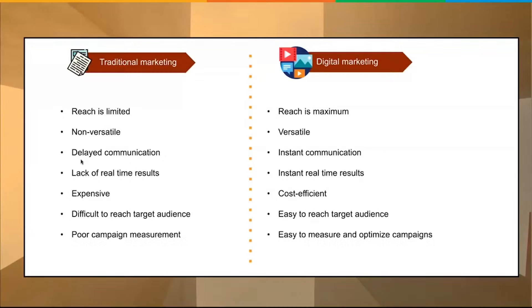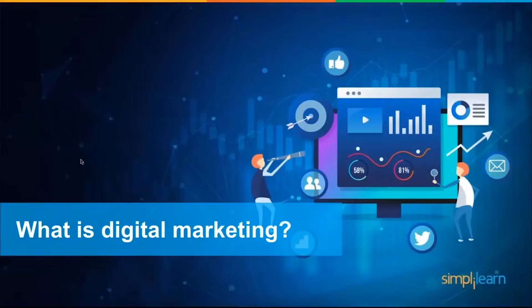Traditional marketing has poor campaign measurement, while with digital you have easy-to-measure and optimize campaigns. Because you get instant results, can control costs, and can reach your target audience more easily, you can measure and optimize based on what your audience is seeing and how much they're spending to see it. You can quickly make adjustments to optimize the campaign for better performance. So that's a culmination of all the benefits we've listed for digital marketing.